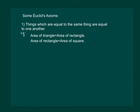and if the area of the rectangle is equal to the area of the square, then the area of the triangle is also equal to the area of the square.